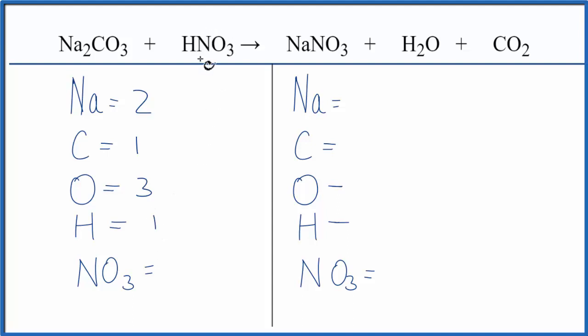three oxygens, one hydrogen, and since this NO₃, this nitrate ion here, it stays together, we have one here and one here, I'm going to just call it one thing. That'll make the balancing a lot easier. I can't do that with the carbonate because the carbonate breaks up into different compounds.